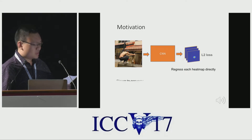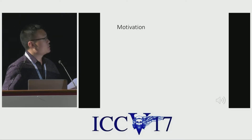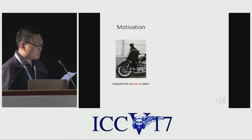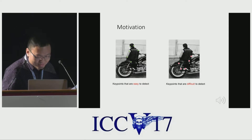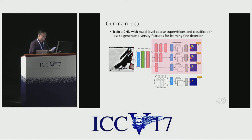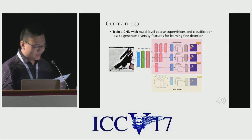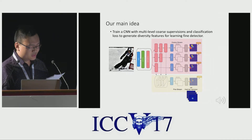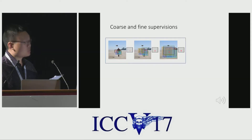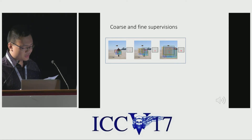These methods typically use heatmaps generated from ground truth keypoint locations as supervisory information. Traditional keypoint localization methods use heatmaps and outlooks to train the network. However, the training converges slowly and the network may not be able to learn discriminative features.